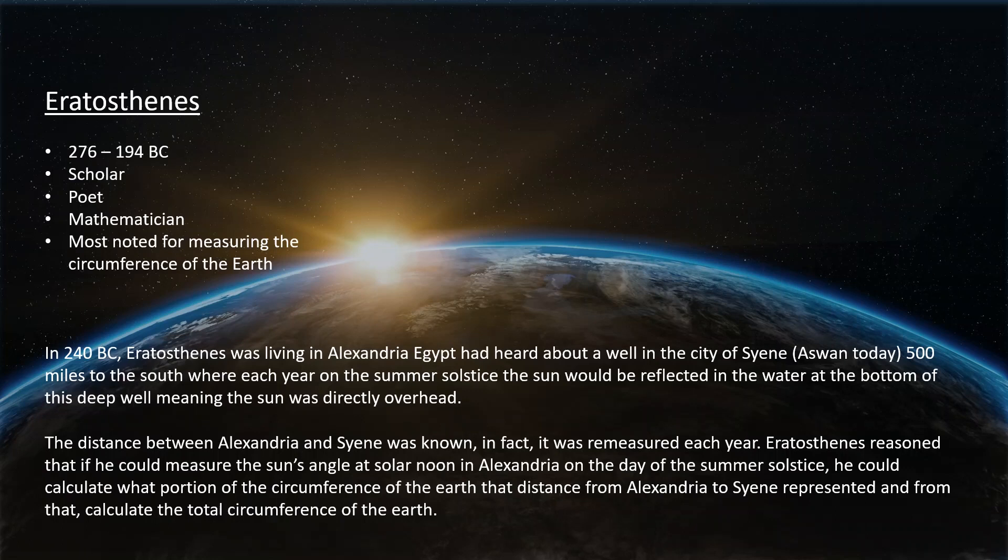Eratosthenes reasoned that since he knew that distance, and if he could measure the angle to the sun at solar noon where he lived, he would then be able to calculate the total circumference of the earth.